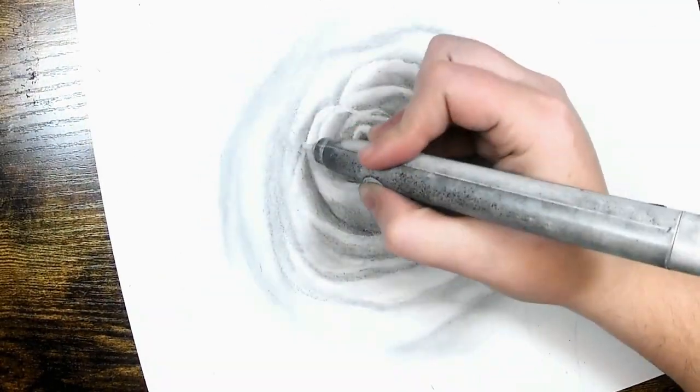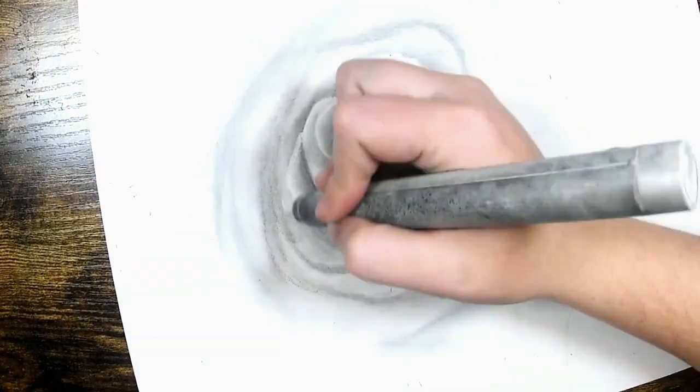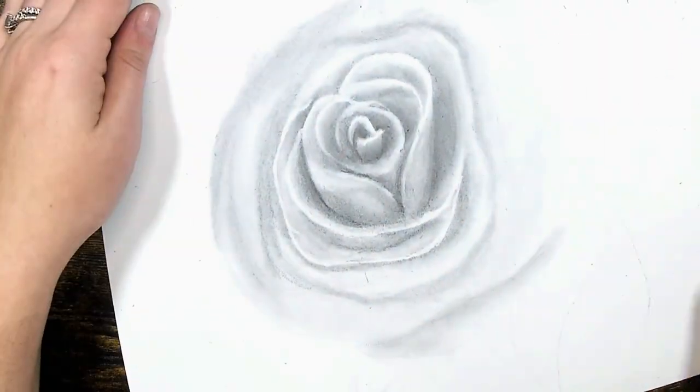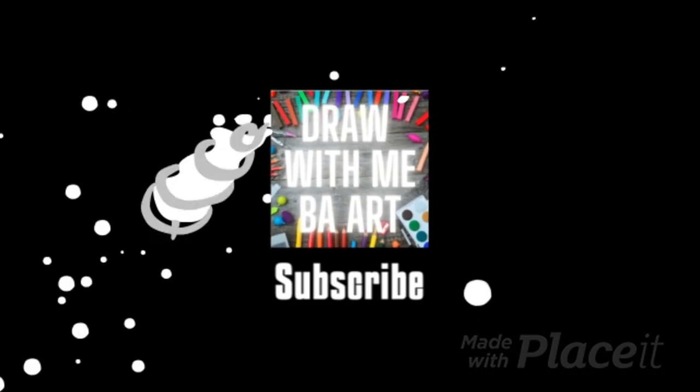An electric eraser or a pencil eraser is a great tool for highlighting the tips of the petals on a rose. You are watching Draw With Me Bar and today I will share with you tips on how to draw a rose.